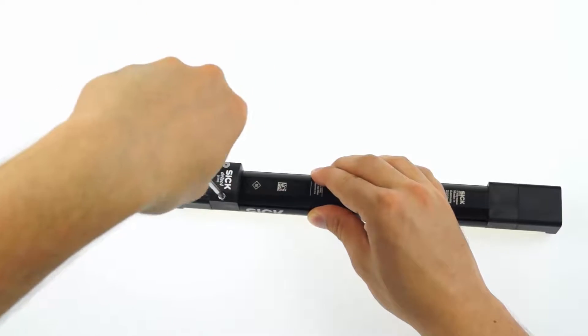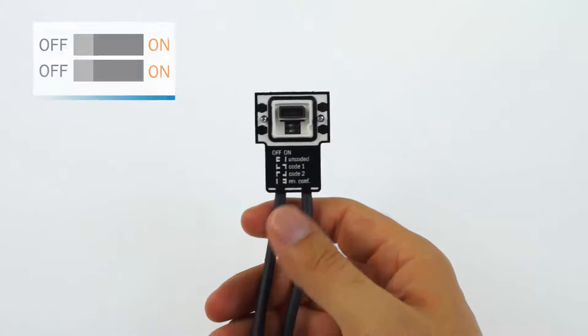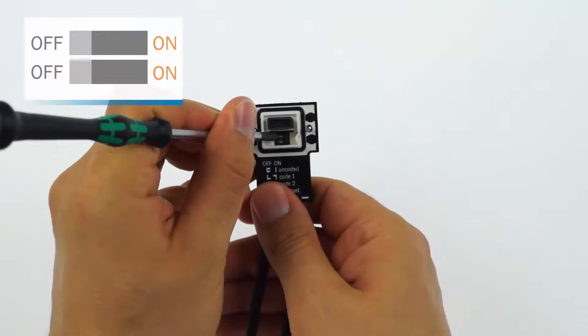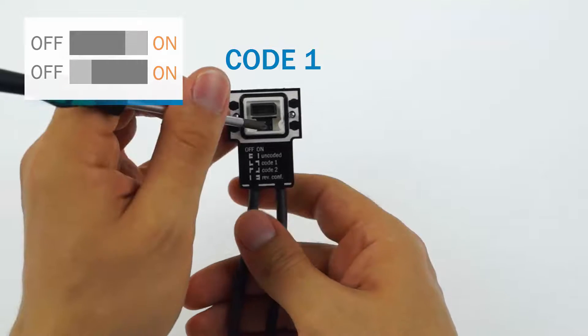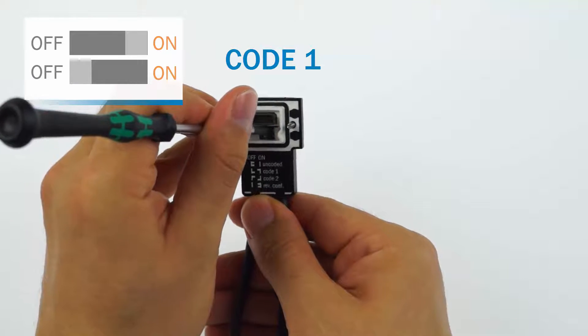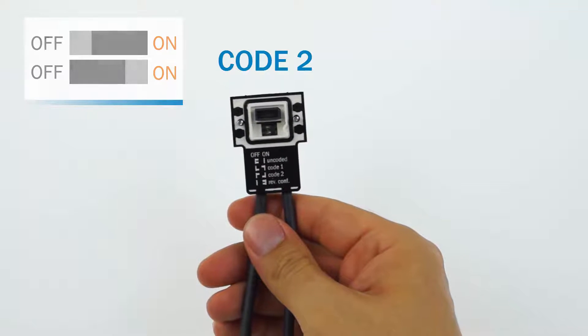Then detach the system plug by loosening the two retaining screws. On the system plug you find two DIP switches. With those switches you can set two different codes by either setting the first switch to ON and the second switch to OFF or vice versa. Make sure to code all corresponding devices accordingly.